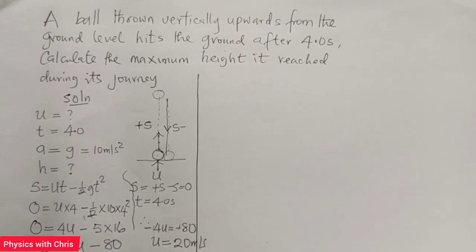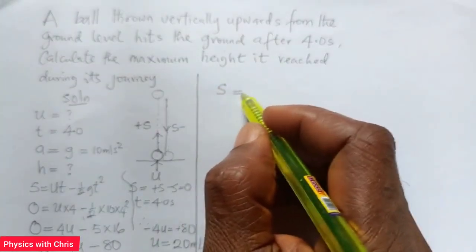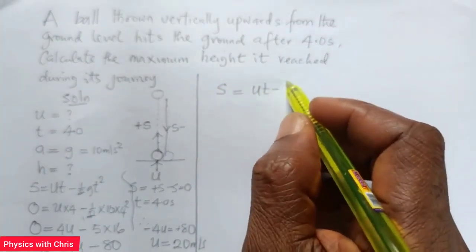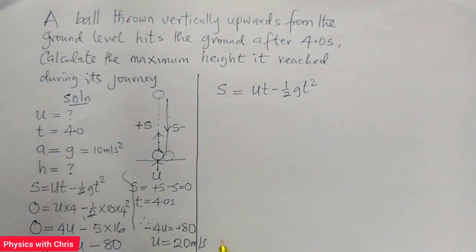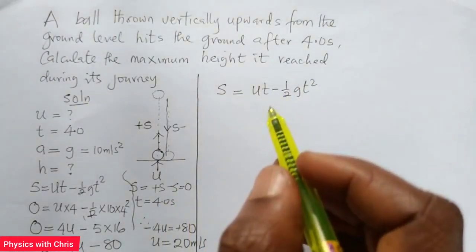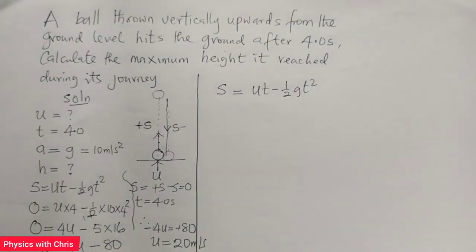So that is the initial speed of this ball. Next we are going to calculate the maximum height it reached in the course of its journey. To calculate the maximum height, we are still going to use this equation: S equals UT minus half GT squared. And then this time around, we are taking the velocity as positive. Therefore G will be taken as negative since it's an upward direction.